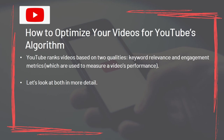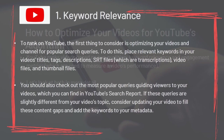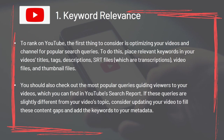How to optimize your videos for YouTube's algorithm: YouTube ranks videos based on two qualities — Keyword Relevance and Engagement Metrics. For keyword relevance, place relevant keywords in your video's titles, tags, descriptions, SRT files, video files, and thumbnail files. Also check the most popular queries guiding viewers to your videos in YouTube's search report. If these queries differ slightly from your video's topic, consider updating your video to fill content gaps and add keywords to your metadata.